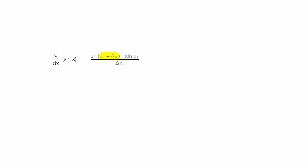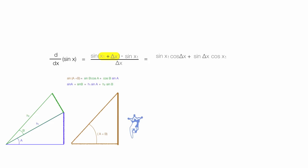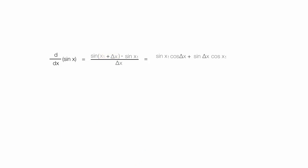I can rewrite sine of x1 plus delta x as sine of x1 times cosine delta x, plus sine of delta x times cosine x1. If you're curious why that works, I have a video linked below that walks you through this trig identity step by step. Then I subtract off sine of x1, and all this is divided by delta x.